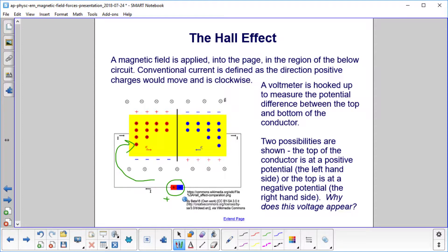We hook up a voltmeter to measure the potential difference between the top and bottom of the conductor. We've got this bigger piece of metal here, so we do have a difference in the Y direction. We have two cases here. If positive charges are flowing, we're going to say this is what happens.